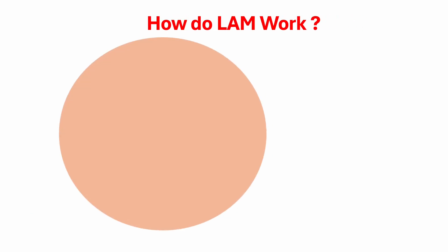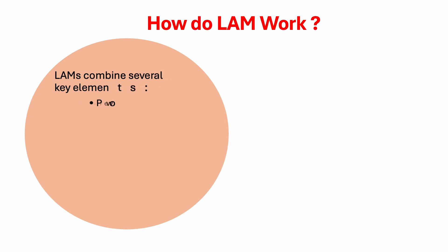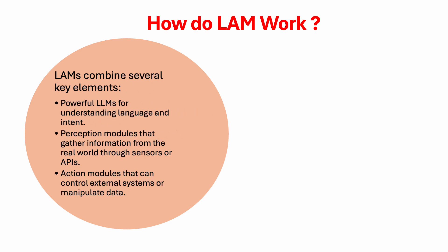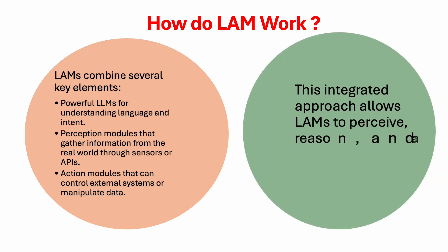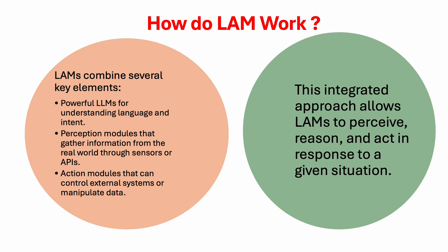How do LAMs work? LAMs achieve their impressive feats through a combination of several key elements. First, LAMs leverage the power of large language models, allowing them to understand human language and user intent. Secondly, they employ a perception module that can gather and access data from weather services, read your calendar entries, or even use real-time traffic updates. Finally, LAMs utilize an action module that can control external systems or manipulate data.